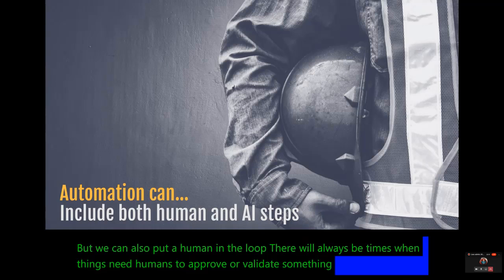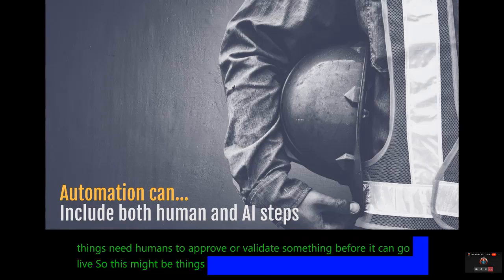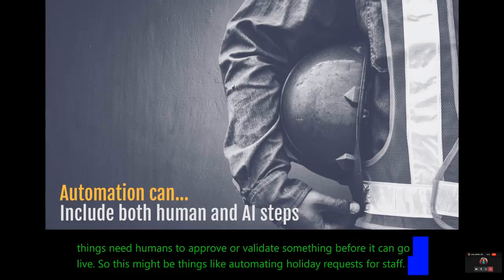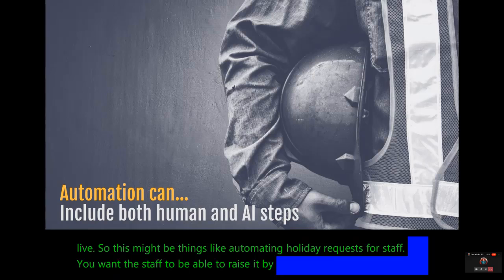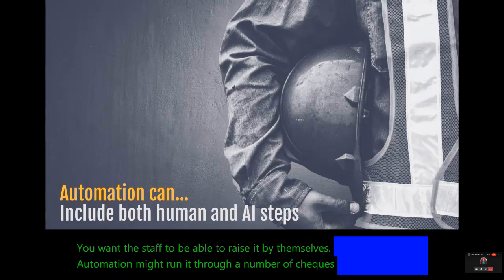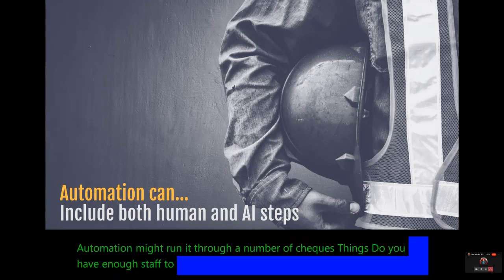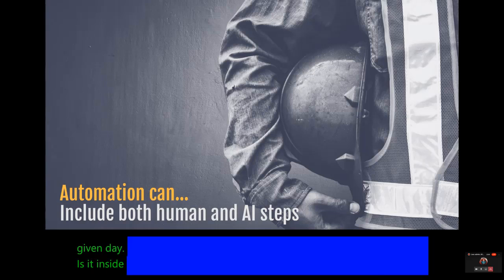Before it can go live, so this might be things like automating holiday requests for staff. You want the staff to be able to raise it by themselves. Automation might run it through a number of checks, things like do you have enough staff to cover the shifts if a person requests holiday for a given day. Is it inside their holiday allowance?